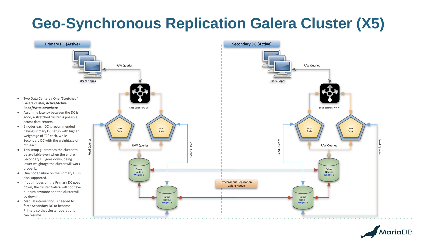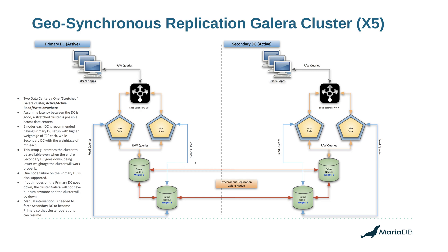Having three nodes on each data center would mean a total of six nodes, which would slow down replication. That's why we use two nodes per data center, forming one big Galera cluster across both sites. The positive of this is that it is an active/active setup — you can read and write on both sides without needing to fail over. However, latency can be a problem if your network latency is not good enough, since synchronous replication requires very high throughput across the cluster.